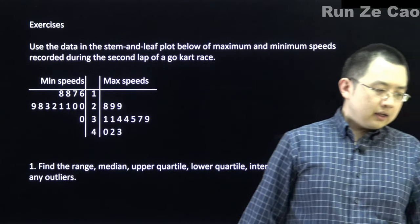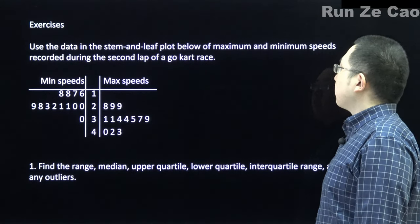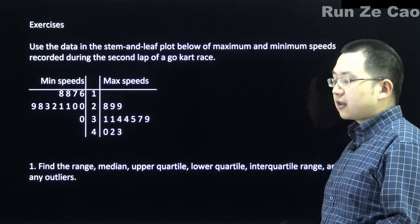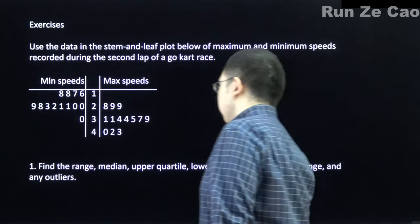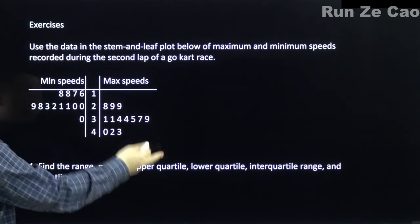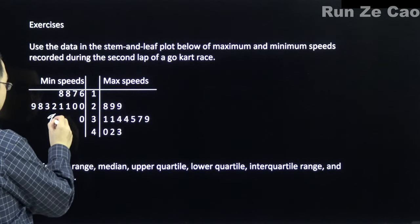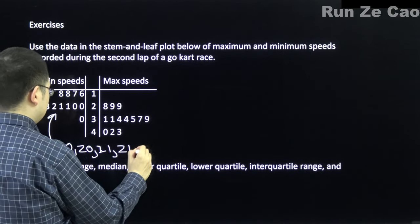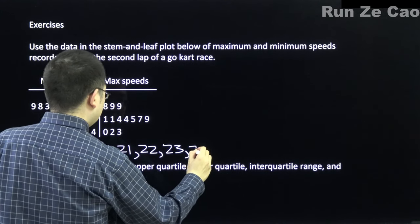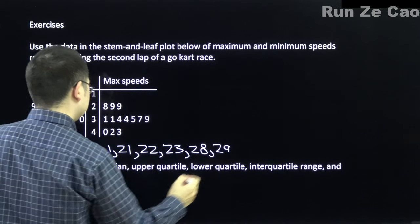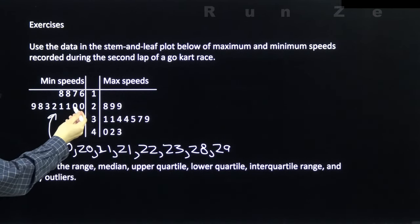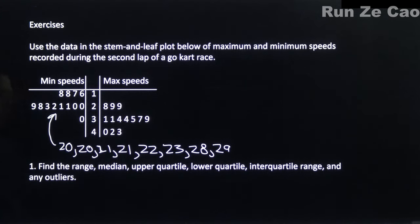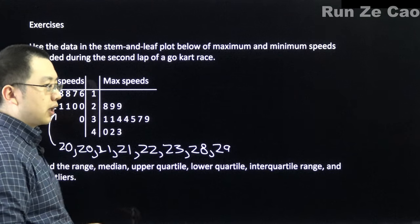Let's do some exercises. This data shows maximum and minimum speeds recorded during the second lap of a go-kart race. If you have a two-way stem and leaf plot, the leaves on each side go from least closest to the stem to most furthest away from the stem, on whichever side you're putting your information.